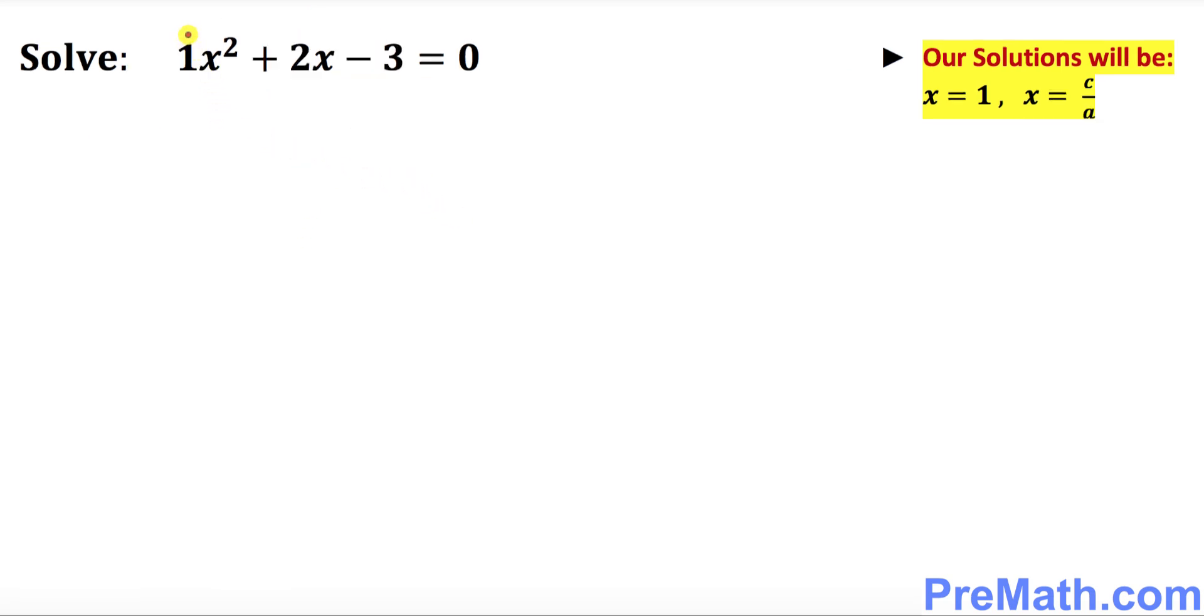In this next example our a is 1, b is positive 2, c is negative 3, and if you add them up a plus b plus c turns out to be 0 so we can apply this. Our solution is going to be simply x equal to 1, and the other solution is going to be c over a. C is negative 3 over 1 which could be written as x equal to negative 3. So these are our two solutions.